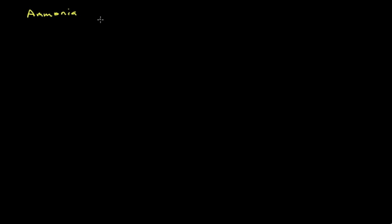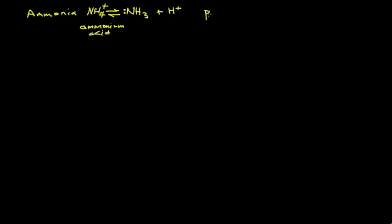Let's try a problem where we have only a weak base added. Let's consider an ammonia solution. Household cleaners often contain ammonia. Ammonia is actually a weak base — it has a lone pair of electrons that can couple with hydrogen ions. So if we have hydrogen ions in solution, we can have an equilibrium between that and this weak base, forming ammonium, which is a weak acid. So we can find a pKa value for that, and if you look it up in the back of quantitative analysis books, you'll find a value of 9.26.